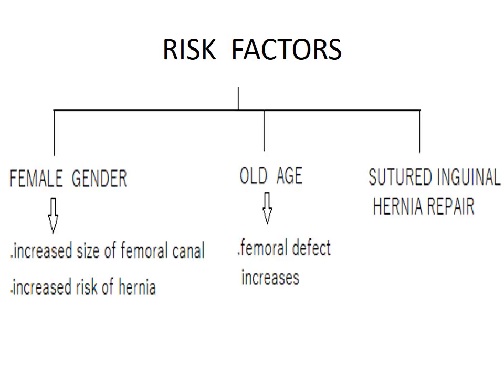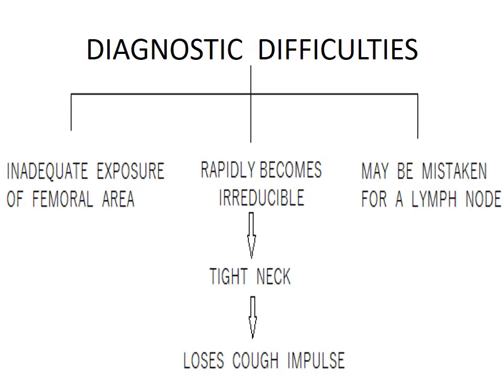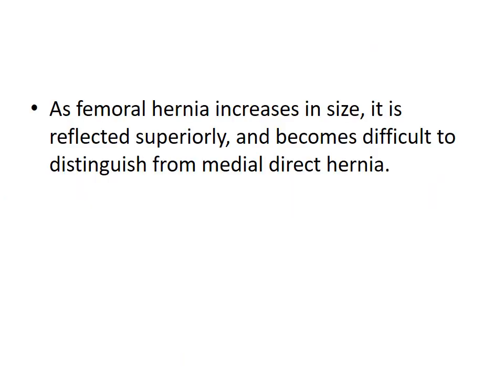Risk factors of femoral hernia: it is more common in females due to the increased size of the femoral canal, and more common in old age because the femoral defect increases. The suture repair of inguinal hernia is also a risk factor. There is inadequate exposure of the femoral area, and the femoral hernia rapidly becomes irreducible due to the tight neck, so the cough impulse is lost. The femoral hernia can be mistaken for a lymph node. When the femoral hernia increases in size, it is reflected superiorly and becomes difficult to distinguish from a medial direct hernia.